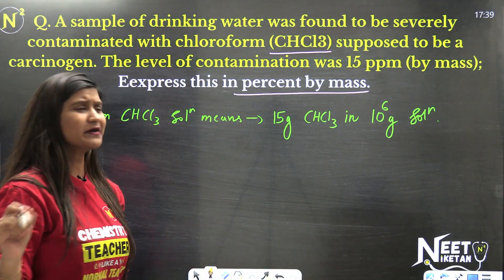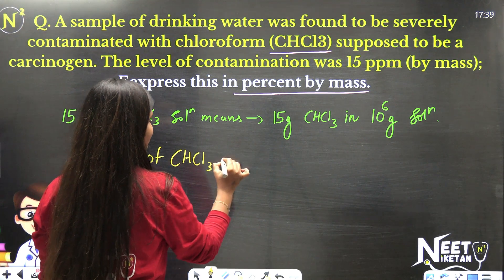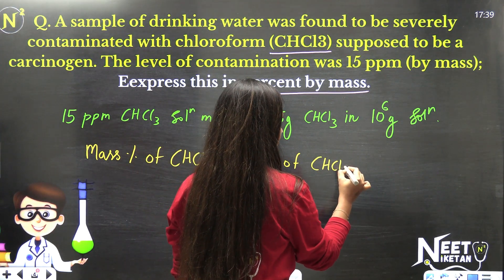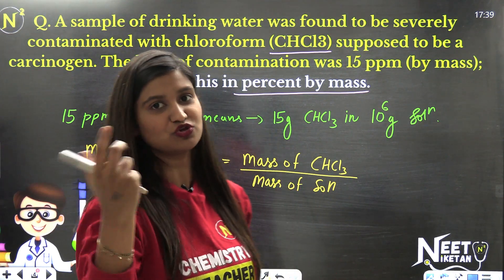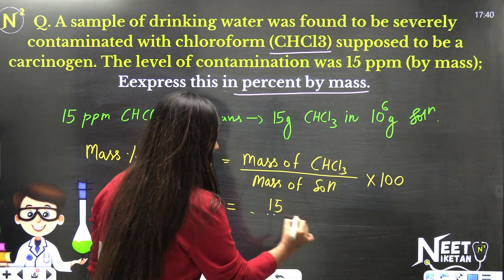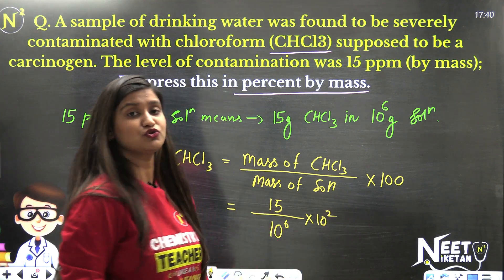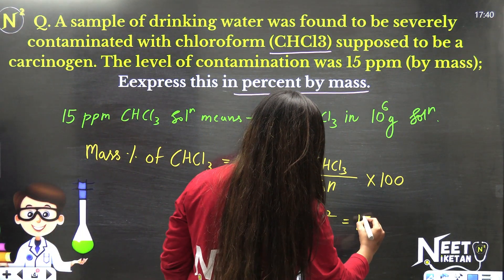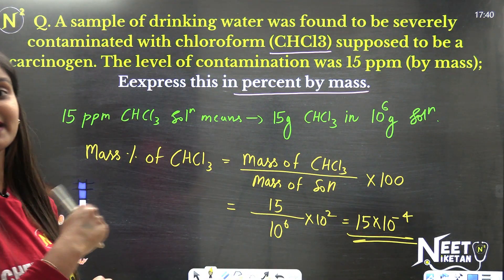If I tell you I have 15 ppm CHCl3 solution, it means if you have 10 raise to power 6 grams solution, then out of that, 15 grams is CHCl3. So 15 grams CHCl3 in 10 raise to power 6 grams solution - that's the meaning of 15 ppm solution. Now we have to find mass percentage of CHCl3. For this, what do we need? Mass of CHCl3 over mass of solution, multiplied by 100 because we're talking about percentage. So everything is available - CHCl3 mass is 15 grams, mass of solution is 10 raise to power 6 grams, multiplied by 100 or 10 raise to power 2. When you calculate this, it becomes 15 into 10 raise to power minus 4. This becomes your final answer.